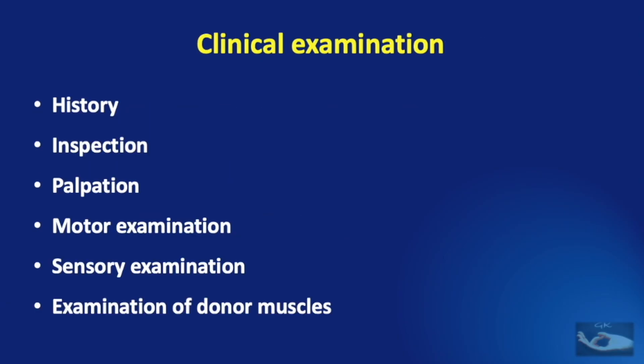As in all clinical examination, we shall start with the history, then the inspection, palpation, motor examination, sensory examination, and in the case of radial nerve injury, we shall also be dealing with the examination of donor muscles.